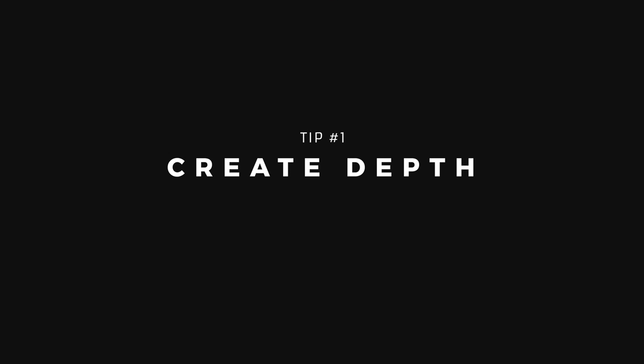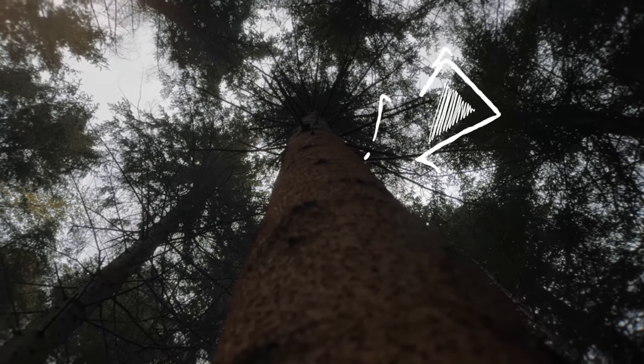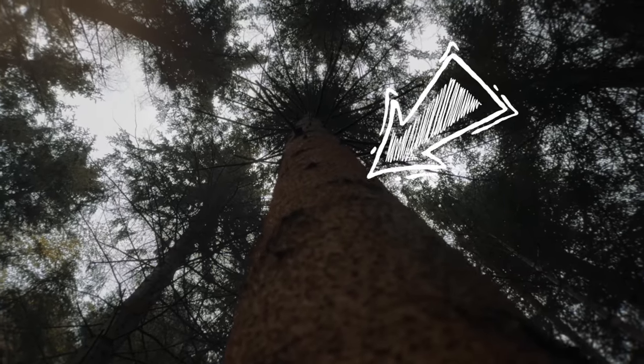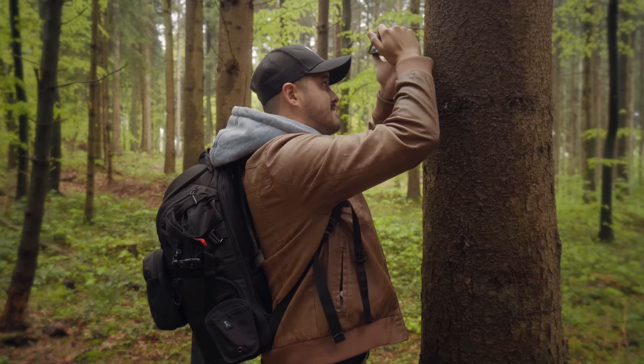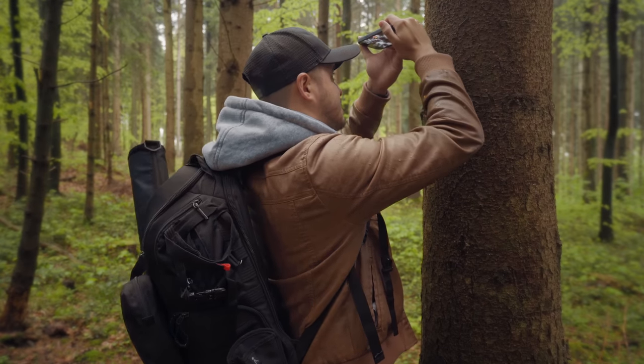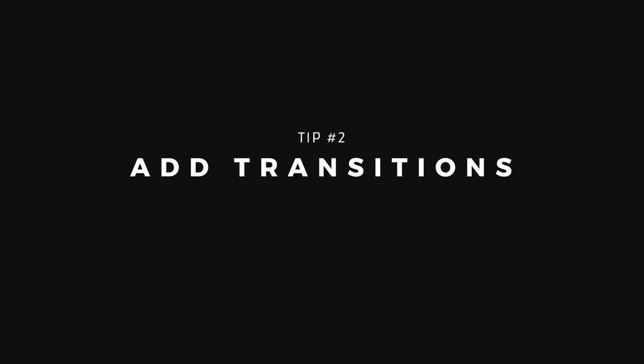My first tip is to create depth in your video. Now, because smartphones have small sensors, this is a bit more challenging to achieve. But the easiest way to do this is to get close to the object or subject you're filming. In my case, I used this tree to create a sort of rotation shot, and by getting close to the branch, I was able to create some depth, making it look more cinematic and three-dimensional.